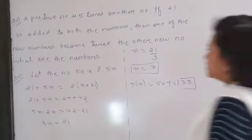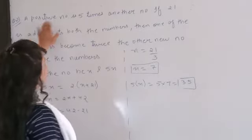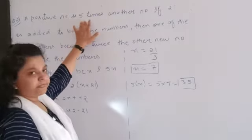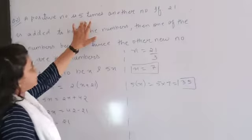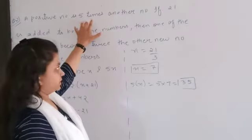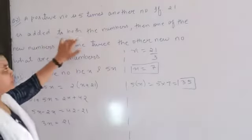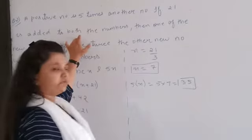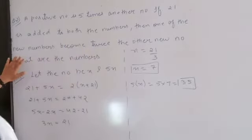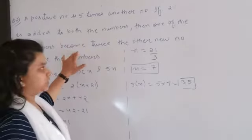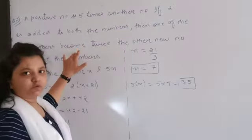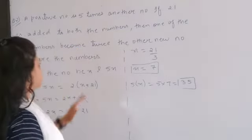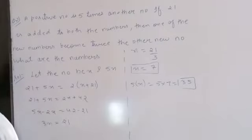Okay, so next question. One number is 5 times another number. If 25 is added to both the numbers, then one of the new numbers becomes twice the other. So if one number is n, the other number is 5n.